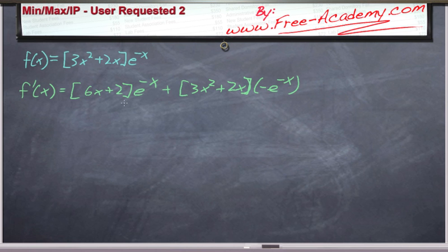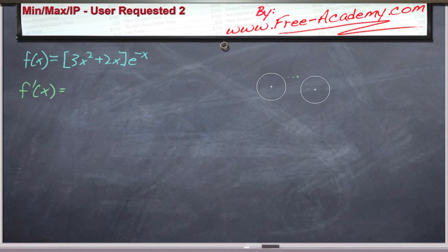We can then distribute out our terms and combine everything. I've worked things on paper, so I'm just going to skip that step, but you can work it out for yourself. And this will be equal to negative 3x squared plus 4x plus 2, e to the negative x.